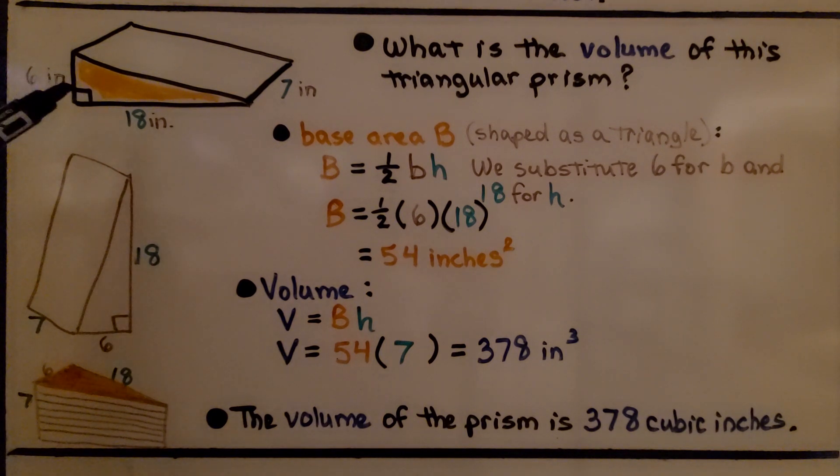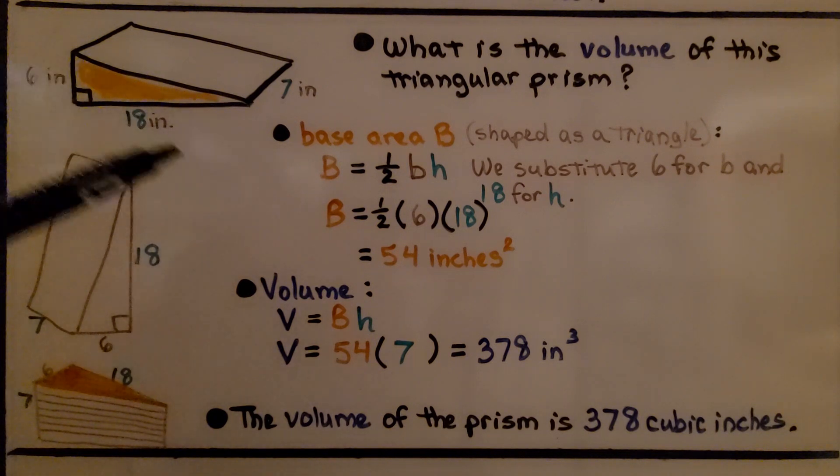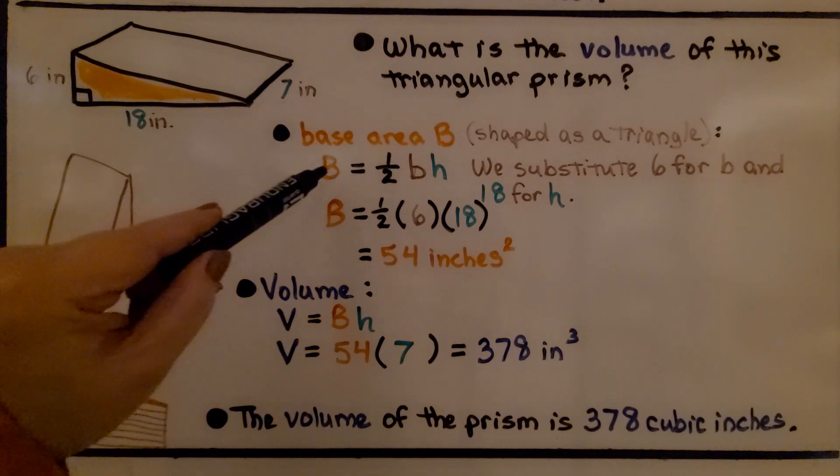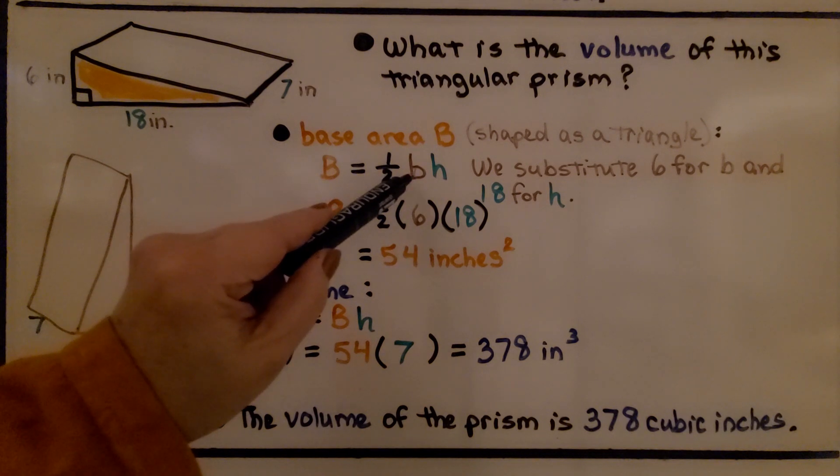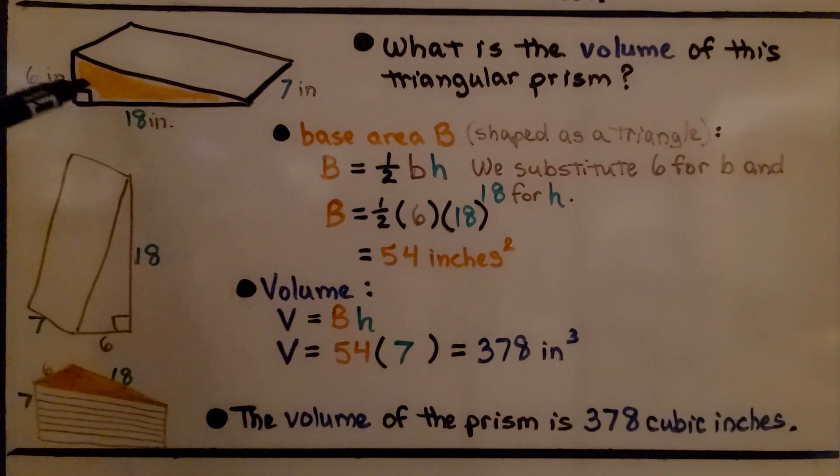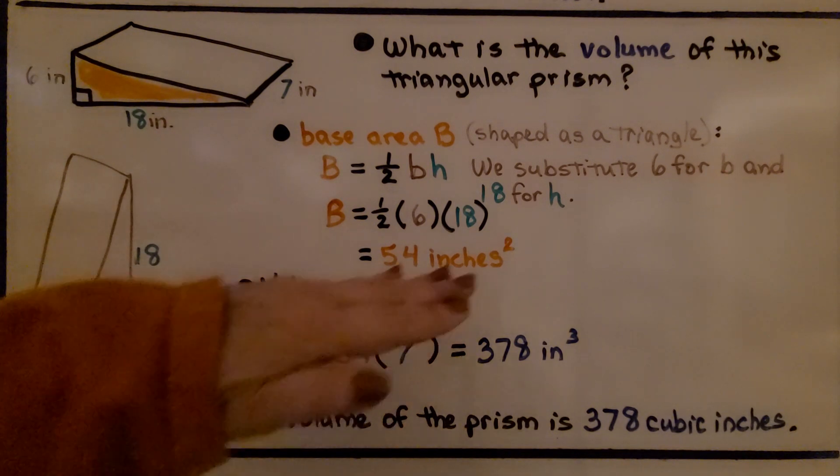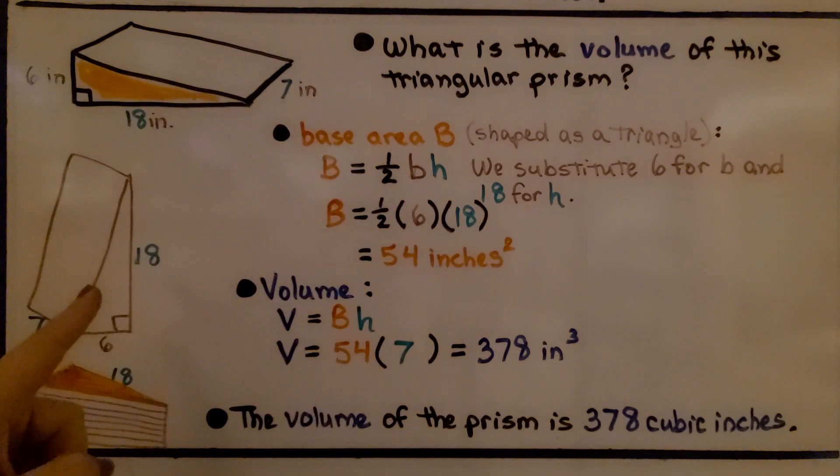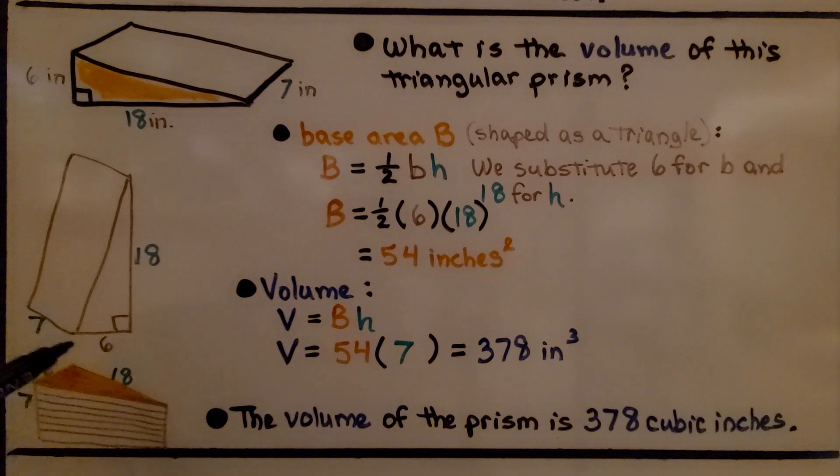Here we have a triangular prism—it kind of looks like a wedge. What is the volume of this triangular prism? First, we'll find the base area B. It's shaped like a triangle. The base area equals half base times height. If you imagine turning this wedge and flipping it this way, our 6 will be here and our 18 will be here. We're finding this area.